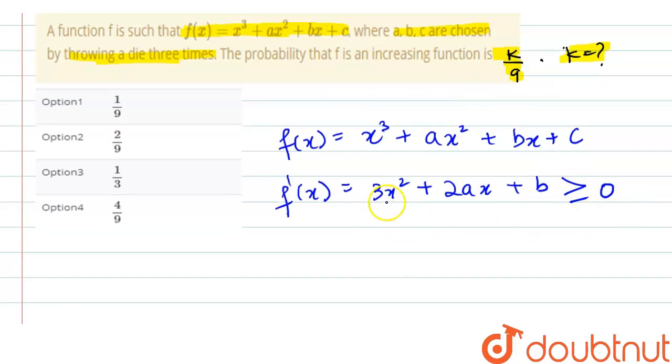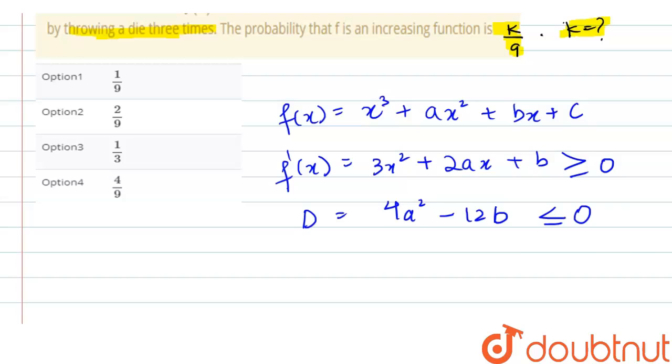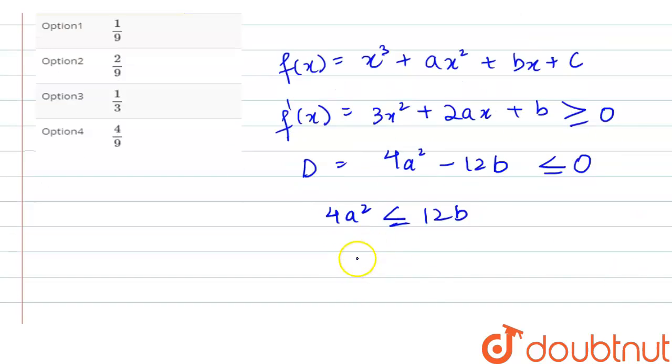Also, the discriminant for this equation should be 4a² - 12b ≤ 0. If we solve this, we get 4a² ≤ 12b, which is a² ≤ 3b.